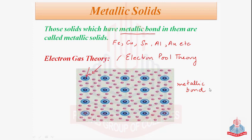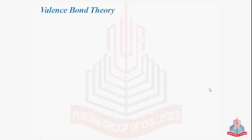Moving on to another theory to explain the metallic bonds — the valence bond theory. Valence bond theory was proposed by Linus Pauling. Pauling tried to explain the metallic bond using the valence bond theory.